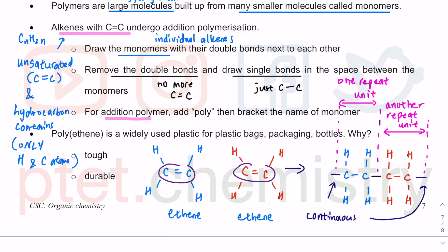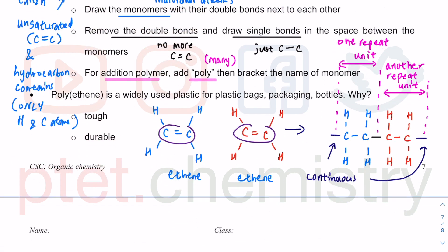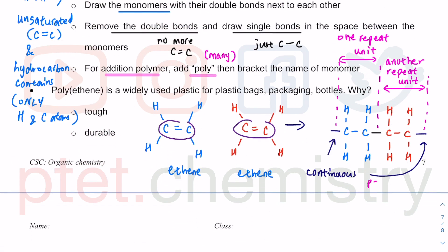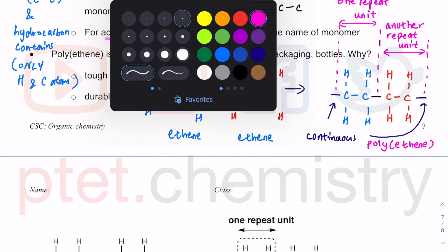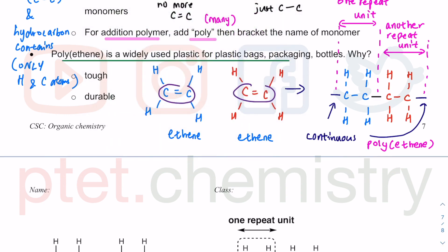For the name of an addition polymer, just add 'poly' — poly means many. So polygamy means many wives, polygon means many sides. For a polymer, many monomers join up together, and then you bracket the name of the monomer. If the monomer is ethene, what you get is poly(ethene). So polyethene is the name of the polymer from ethene.